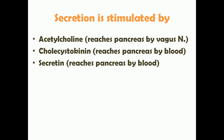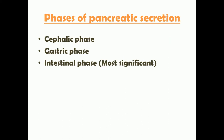On stimulation by food in the intestine, the intestinal mucosal cells — I-cells and S-cells — produce cholecystokinin and secretin. These diffuse into the blood and reach the pancreas via the bloodstream, stimulating increased pancreatic secretion. Like gastric secretions, pancreatic secretion also has three phases: the cephalic phase, the gastric phase, and the intestinal phase. If you haven't seen the video on gastric secretion, the link is in the description.